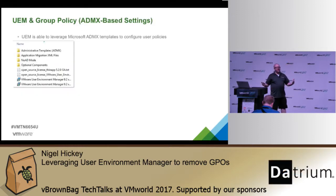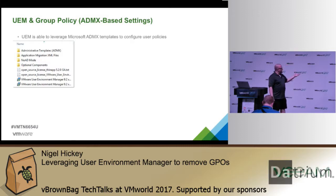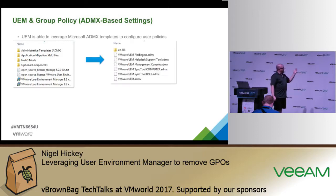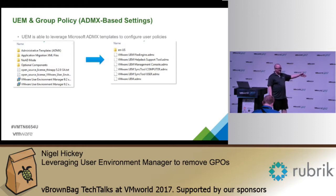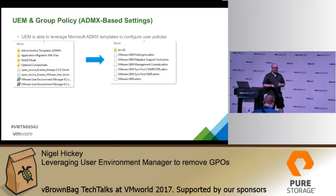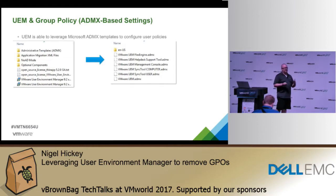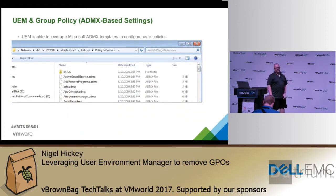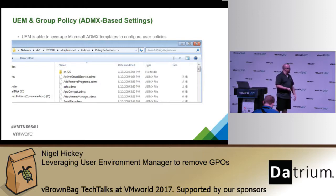To get started, when you download the installation package for user environment manager, a set of tools comes with it including its own ADMX folder. Open that folder and inside you'll find your ADMX policies as well as a language folder — which is very important. Make sure you copy what's in your language folder as well as the files outside of it, because missing some of those will cause group policy and parts of UEM to not function as expected. Then copy all of those into your Active Directory policy definition folders. Once your policies are in there, they can be activated in user environment manager.